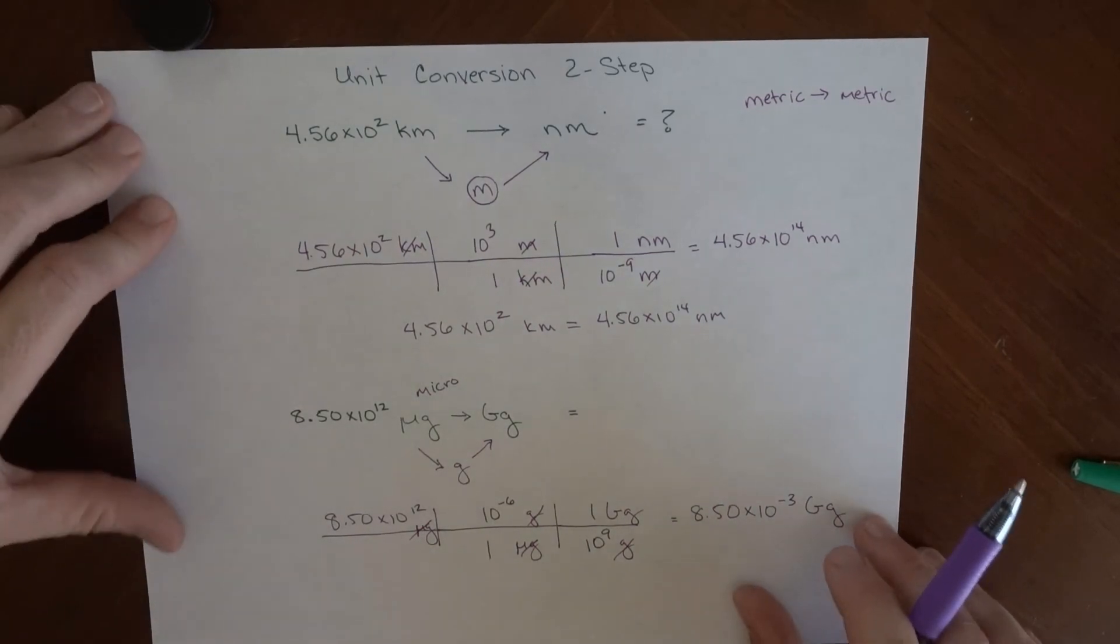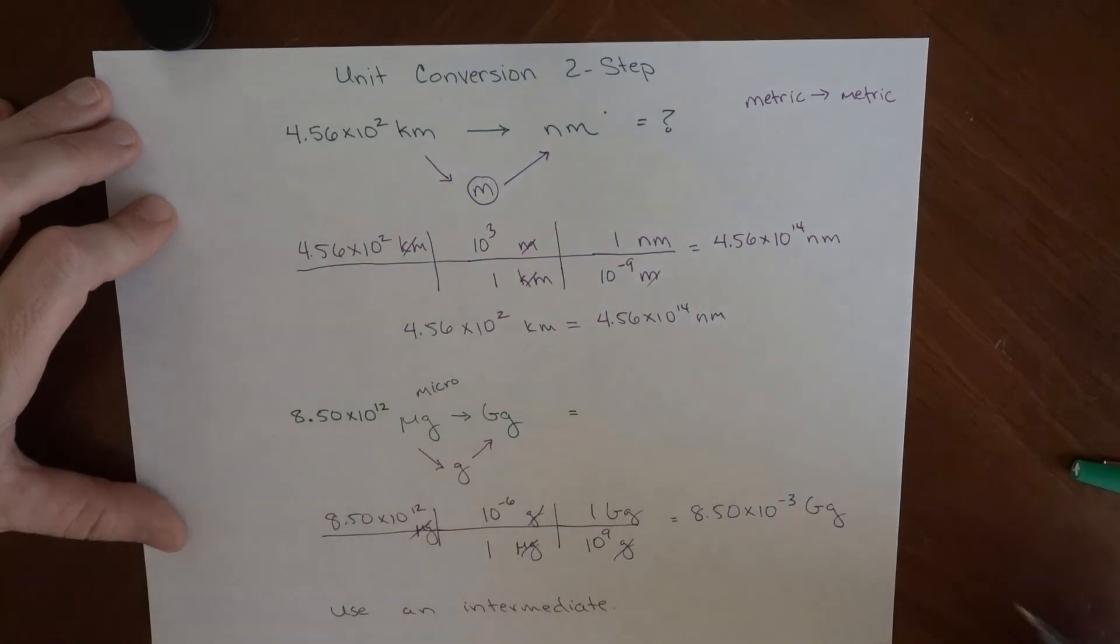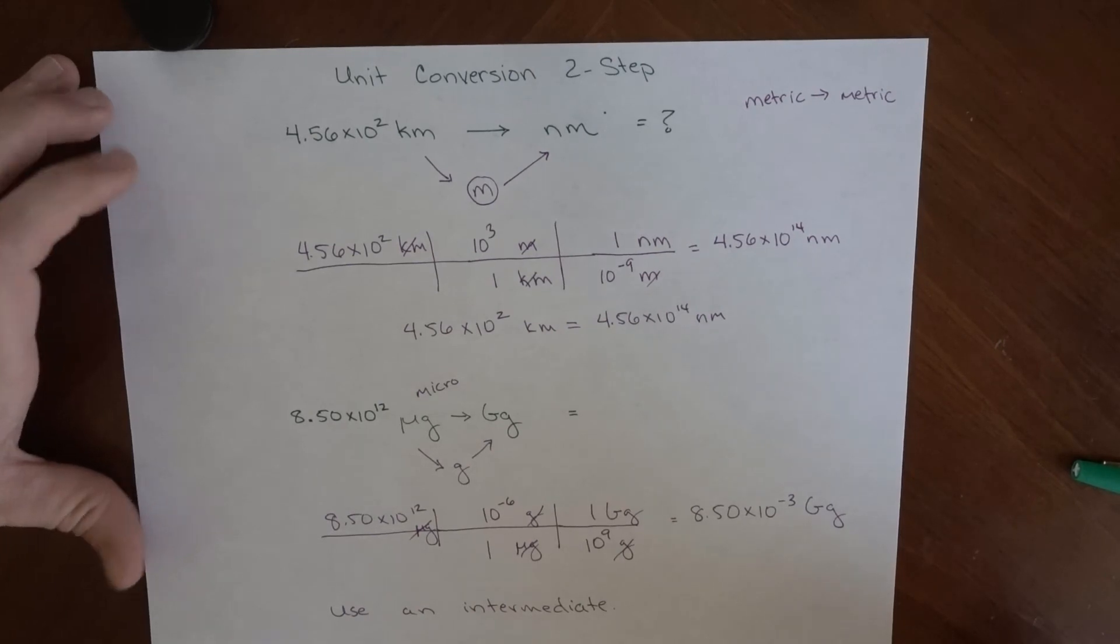So the whole thing for two-step conversion is you basically use multiple conversion factors to get there. And we go to an intermediate unit. So we use an intermediate. So with that, you should be able to convert between any two metric units.